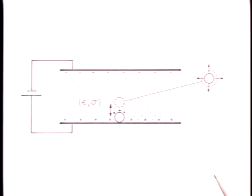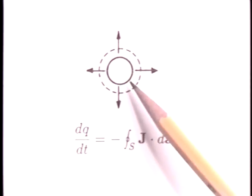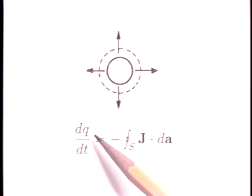Once the sphere rises off the lower electrode, it can be completely enclosed by a surface S. It's entirely in the liquid. If we call the net charge on the sphere Q, conservation of charge requires that the rate of change of Q be equal to the negative of the net current out of the sphere through the surrounding surface.